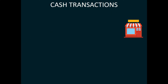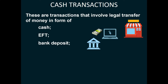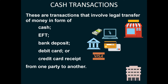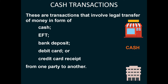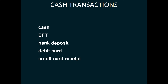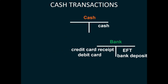Now what are cash transactions? Well, cash transactions are transactions that involve legal transfer of money in the form of cash, an EFT payment — which stands for electronic fund transfer — bank deposit, debit card, or a credit card receipt from one party to another, which means it can be either from business to business. And all of these transactions will be either cash or bank. From the list that we have just covered, if we were to allocate these between cash or bank, only one item will be recorded as cash. The rest of them will fall under bank.